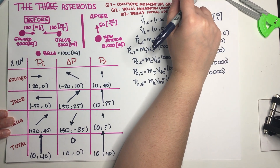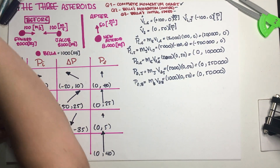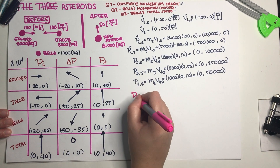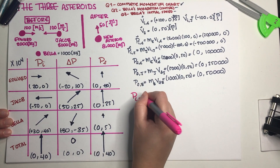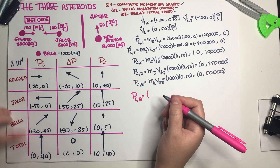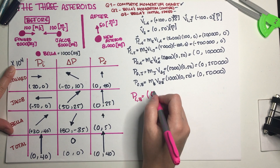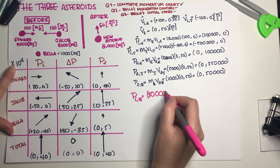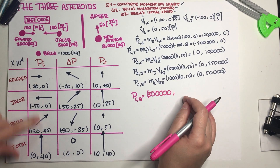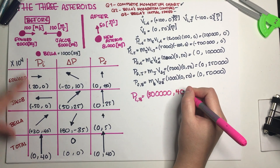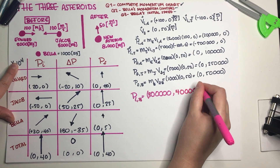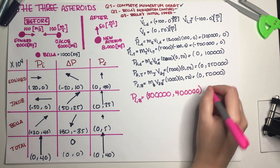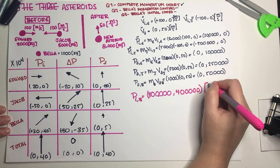Now for part B — Bella's initial momentum. We already found it from the chart: p_Bella_initial = (30 × 10⁴, 40 × 10⁴) = (300,000, 400,000) kg·m/s. Final answers always need units.